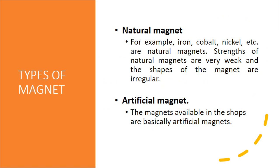There are two types of magnets: Natural Magnet and Artificial Magnet. A natural magnet has an irregular shape and was used in olden days, for example as a compass to find the direction of a ship. Artificial magnets are manmade. The magnets available in shops are artificial magnets and they come in regular, specific shapes.